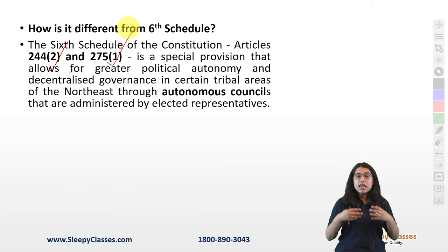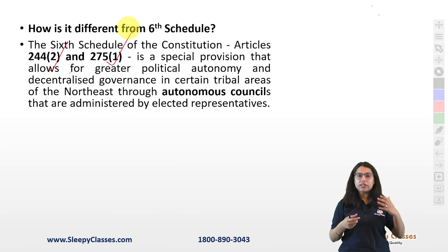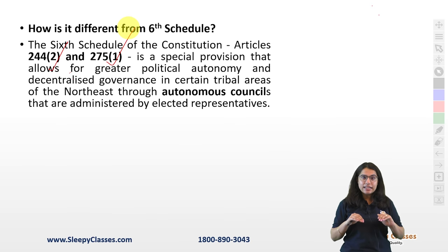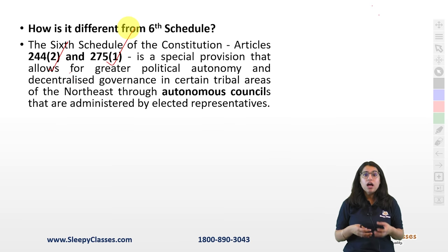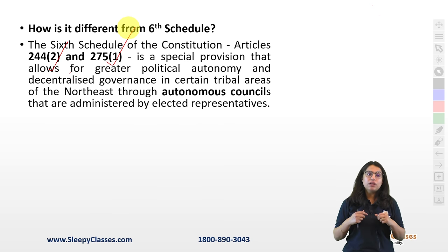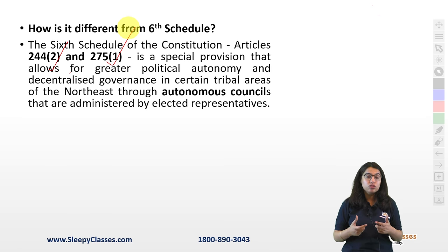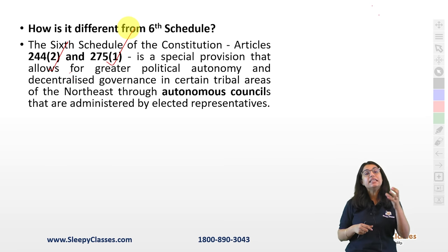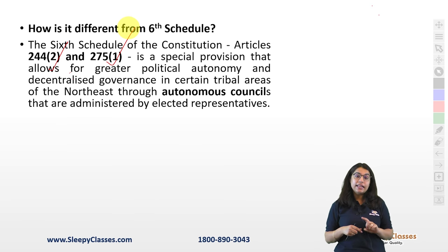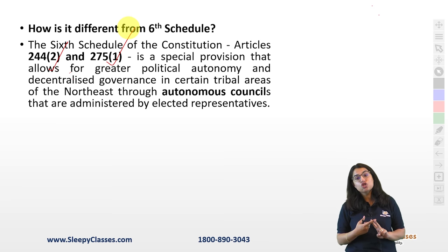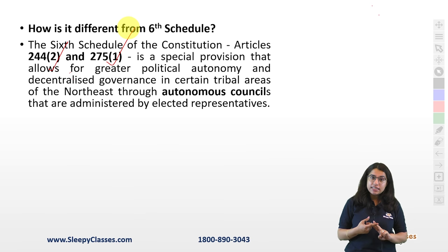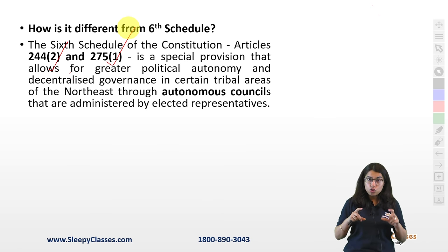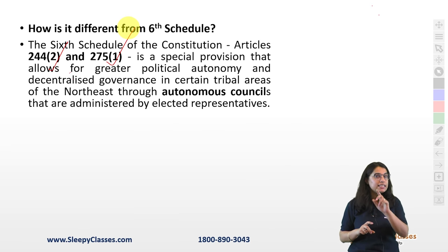The Sixth Schedule provides certain provisions for greater political autonomy, greater political freedom, and decentralized governance in certain tribal areas. Decentralized governance means when governance is in the hands of local district councils — like our Panchayati Raj institutions or municipal corporations and urban local governments — when they have concrete powers to bring about certain laws and changes, we call that decentralization. Task of the day: tell me in which schedule PRIs and ULBs — Panchayati Raj Institutions and Urban Local Bodies — are found, and under which amendment acts they were created.